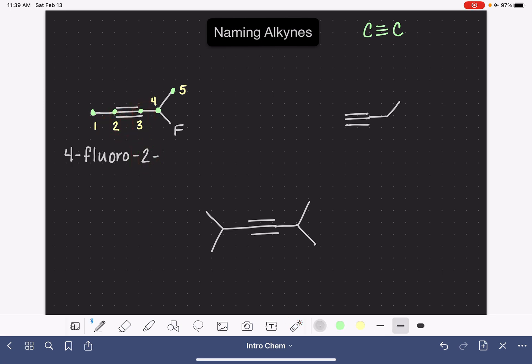And then we say the name of the parent chain. This would be a pentane if it was an alkane. So it's pent-, but instead of saying pentane we say pentyne. Just like with an alkene, we're changing the ending of the name to communicate that there's a triple bond present. And that's all there is to naming it. As you can see, it's very similar to naming alkenes.